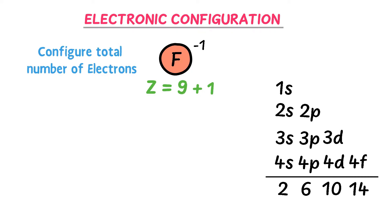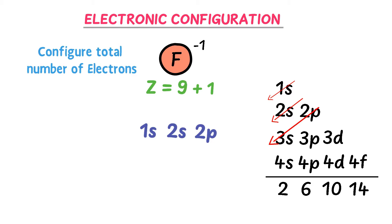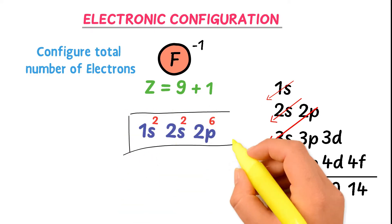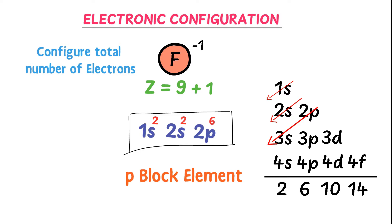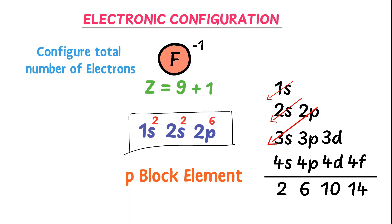I write the subshells: 1s, 2s, and 2p. The 1s and 2s subshells accommodate 2 electrons each, and 2p accommodates 6 electrons: 2+2+6=10. This is the electronic configuration of F⁻: 1s² 2s² 2p⁶. Fluorine is a p-block element because its valence electrons lie in the p subshell. This was all about electronic configuration.